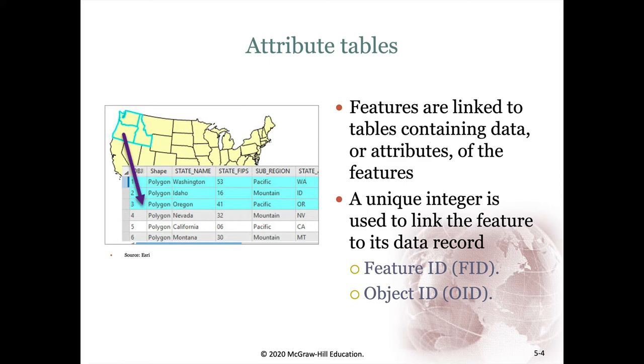There is one unique ID associated with each of these features, in this case the object ID or the OID, which is uniquely associated with that feature. For example, three is uniquely associated with the state of Oregon.